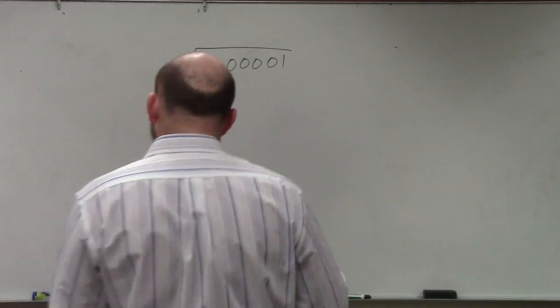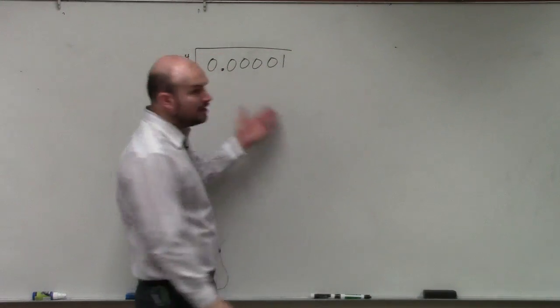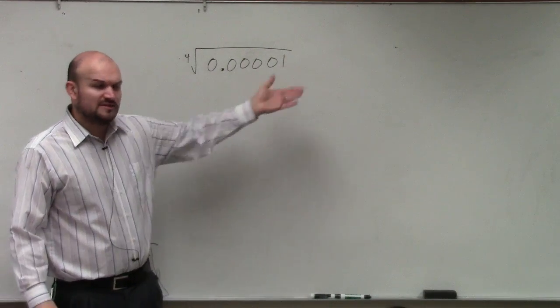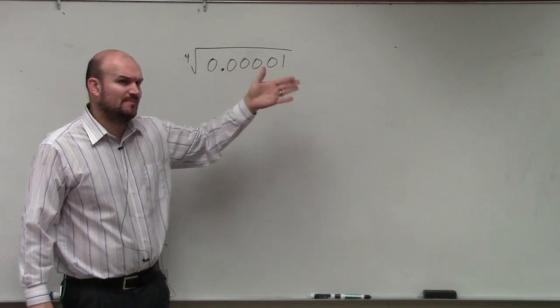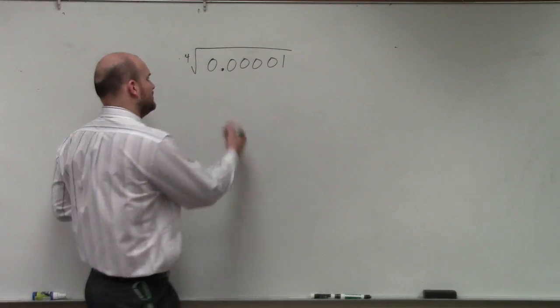So basically what they're asking you is take the fourth root of this number, right? Well, first of all, we need to think of what number is going to multiply by itself, Anthony, to give us 1. And we know that number is going to be 1, right?